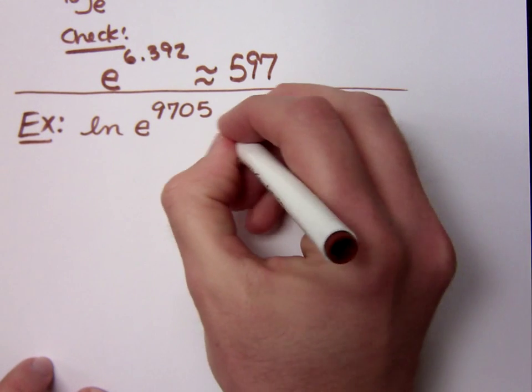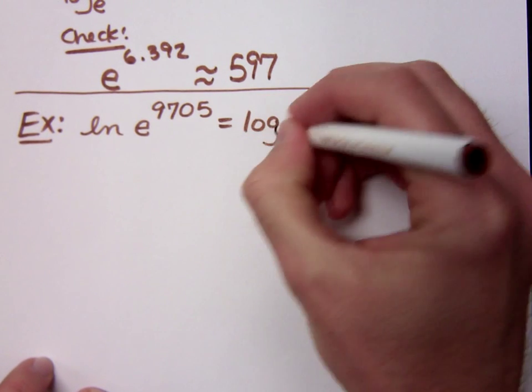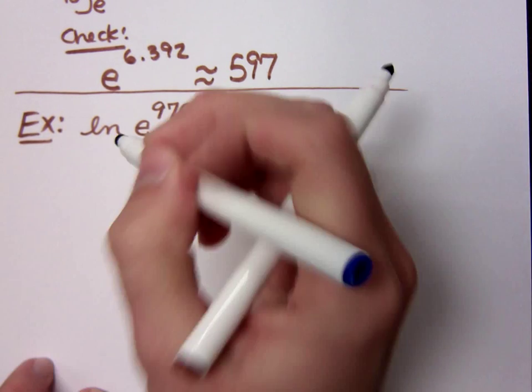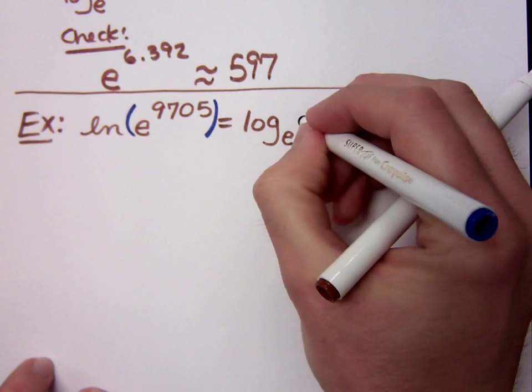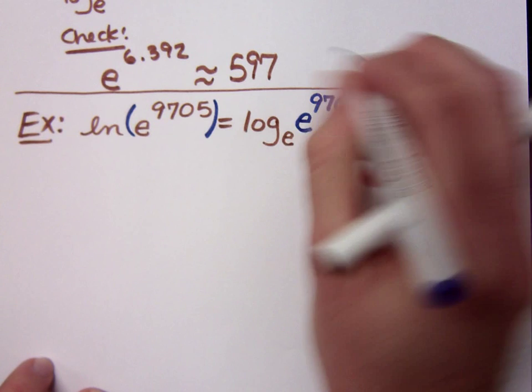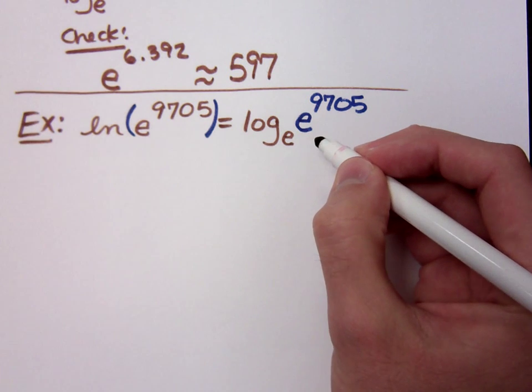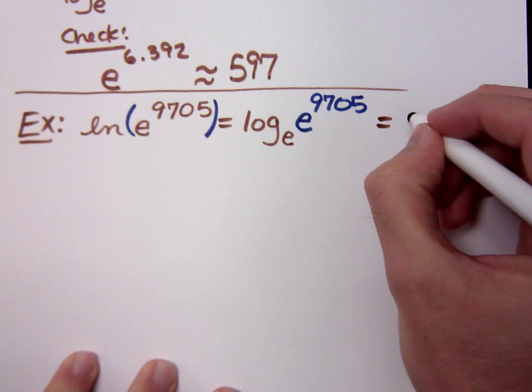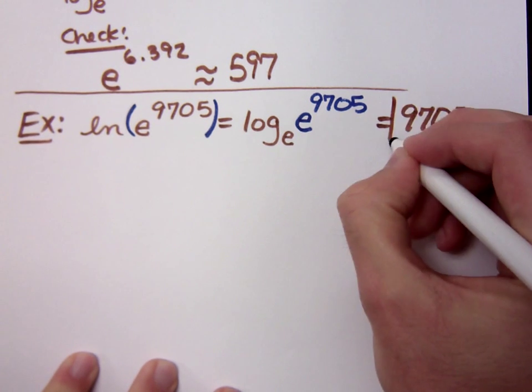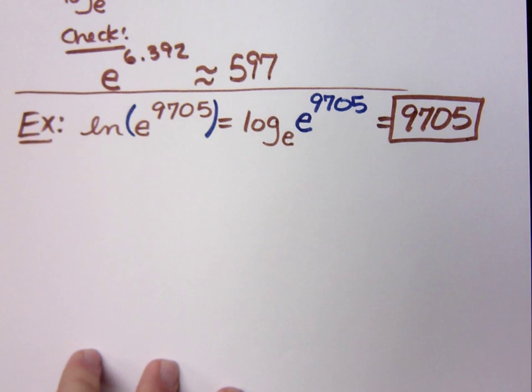But we don't need no stinking calculators. Natural log means log with a base E, right? So if this is what I have inside my log, that's what's inside here. E to the 9,705th power. Since these guys have the same base, and what we saw before, since these guys are inverses, the log and the exponential with the same base are inverses, my answer is just 9,705. You have to know the limitations of your calculator and know when it's not going to work, and when you have to go back to what you're supposed to know here about the log.